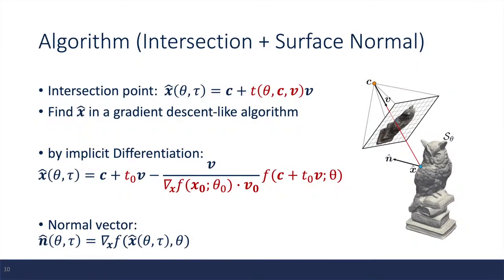And after some calculation, using implicit differentiation, we have an equation for the intersection point, shown as the second equation. And after we have this surface intersection point, we can also find the normal vector by taking the gradient of the implicit function.